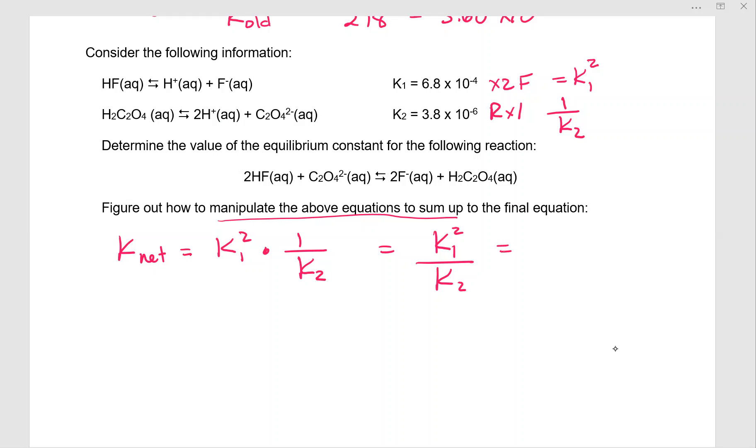So what this means is I have 6.8 times 10 to the negative fourth squared over 3.8 times 10 to the negative sixth. And I only have two sig figs. So this would be 0.12.